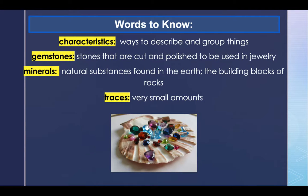As always, here are some words we need to listen for as we are reading our story today. The first word is characteristics. Characteristics are ways to describe and group things. An example: two characteristics of winter are it is the coldest season and snow can fall during it.